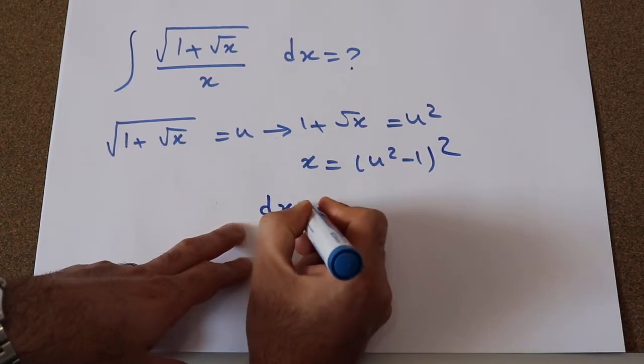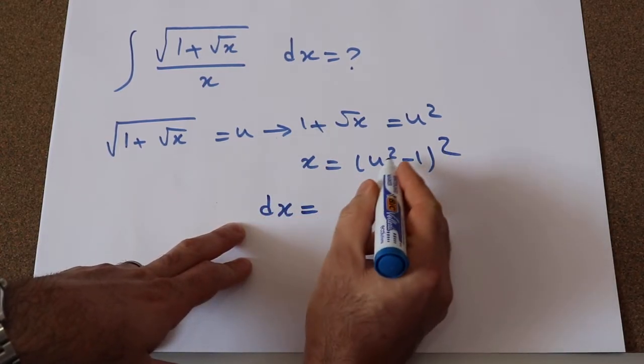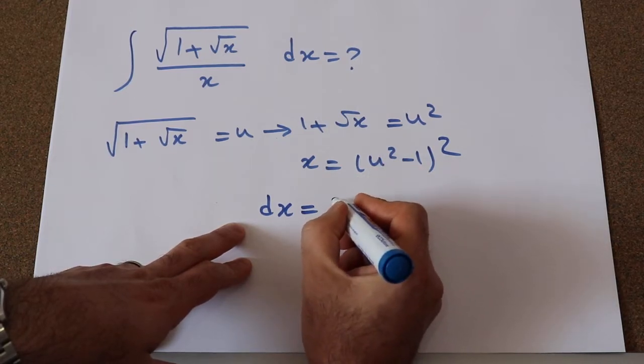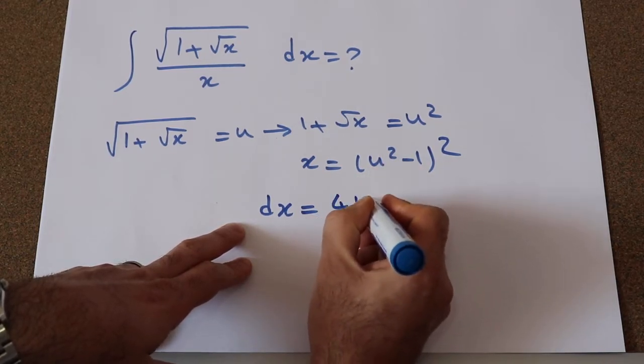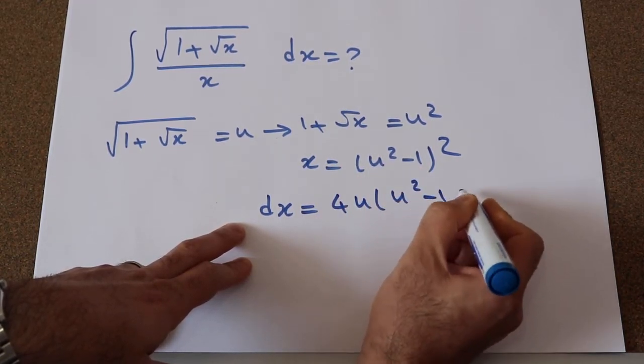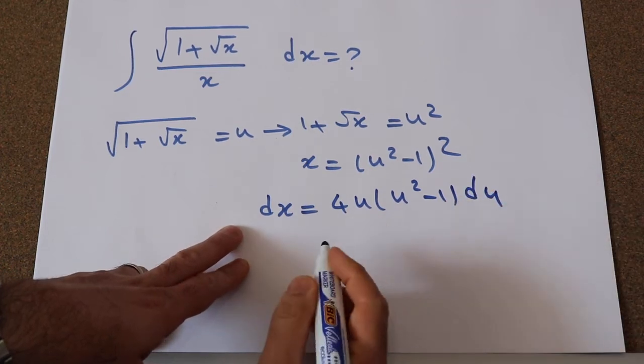And therefore, you can conclude dx will be equal to 2 times 2u, that will be 4u times (u squared minus 1) du.